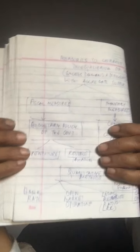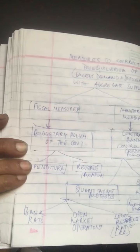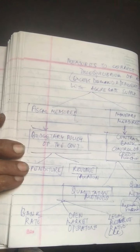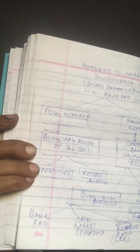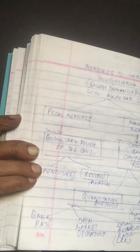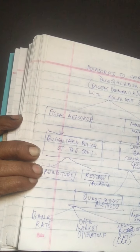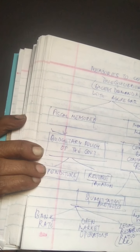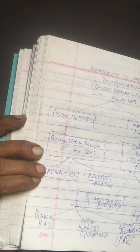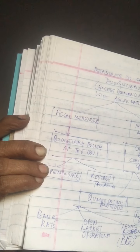Accordingly, if there is inflation, these two measures are used in a specific manner, and if there is a deflationary situation, in another way. These are the remedial measures — the two fundamental policies through which government can intervene in the functioning of the economy: fiscal policy and monetary policy.